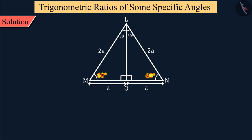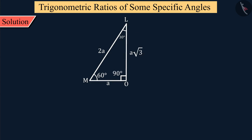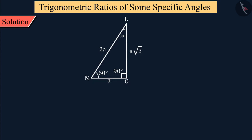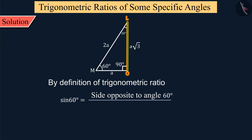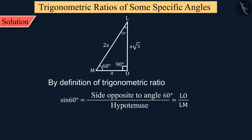Since we also have to find trigonometric ratios of 60 degree angles, from the above right angle triangle LOM, we can tell that the value of sin 60 degrees will be equal to the ratio of the opposite side of angle M and the hypotenuse. On solving this, we obtain the value of sin 60 degrees as the square root of 3 upon 2.